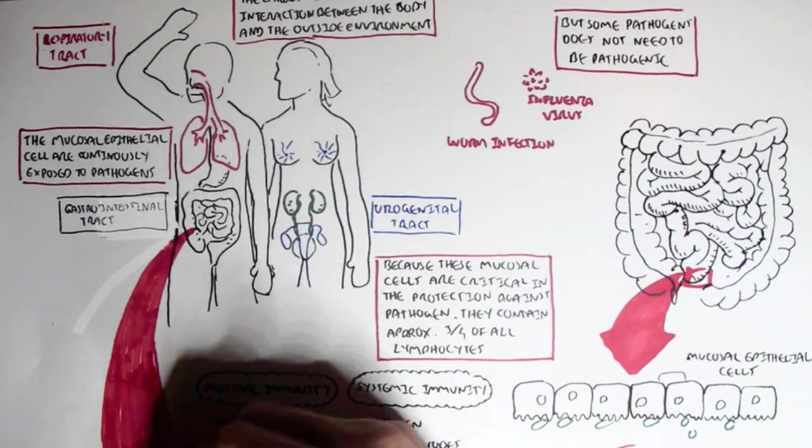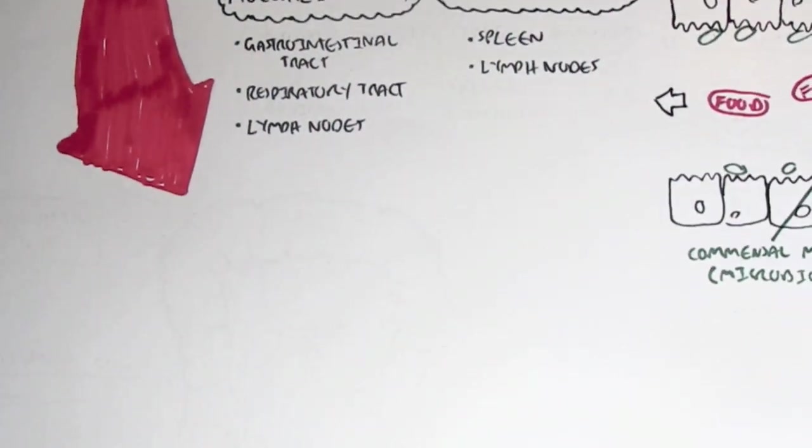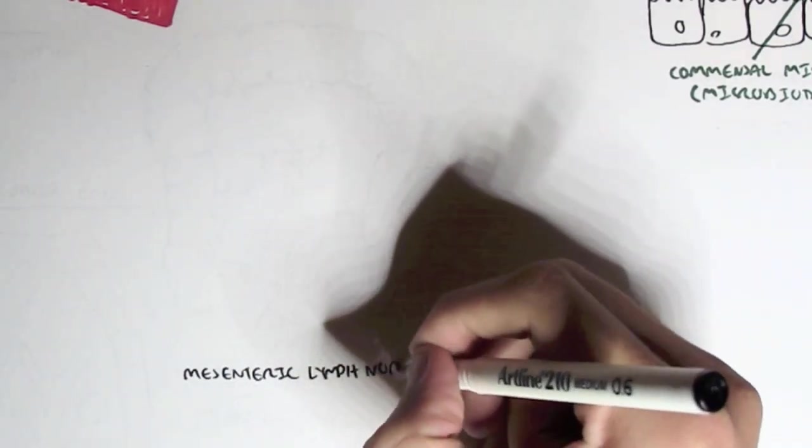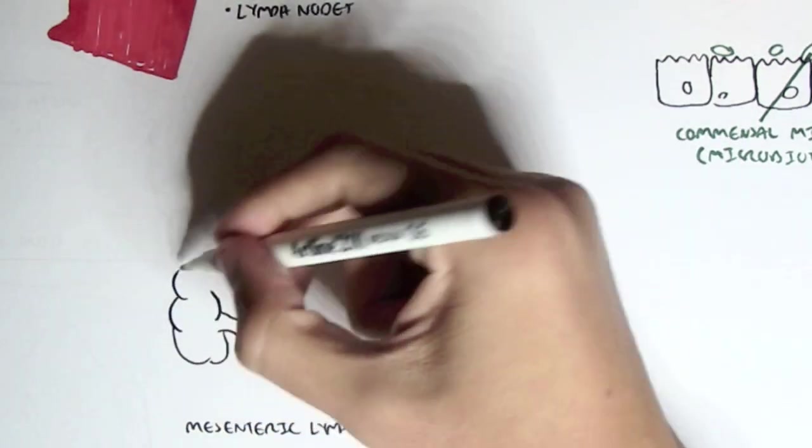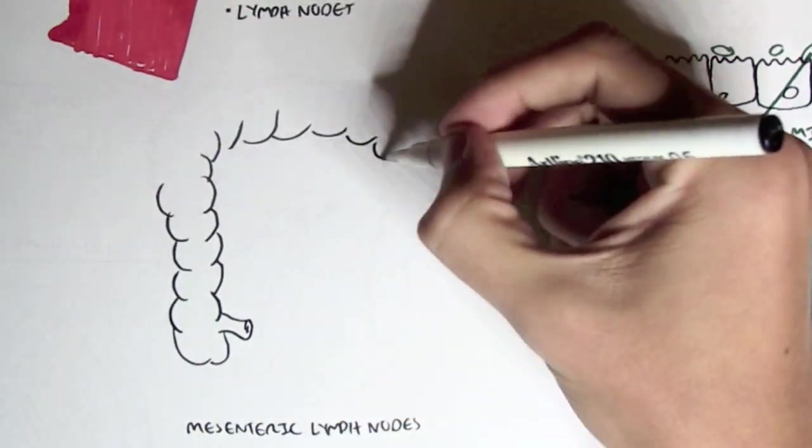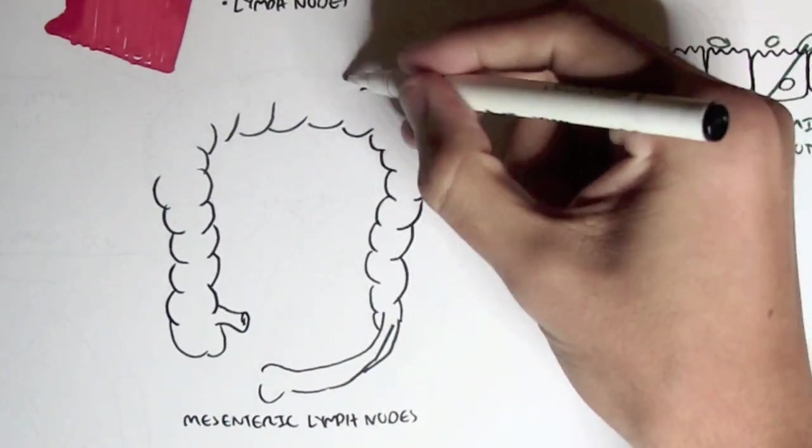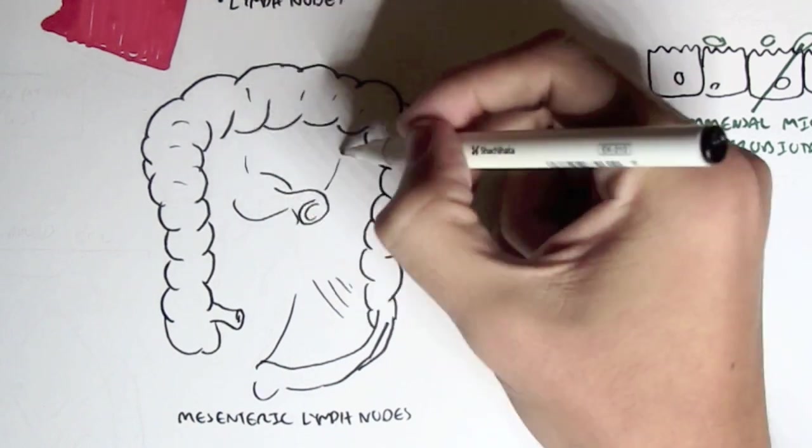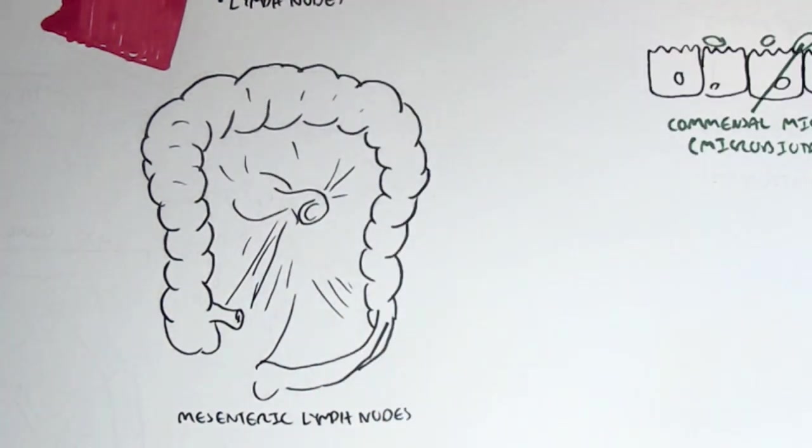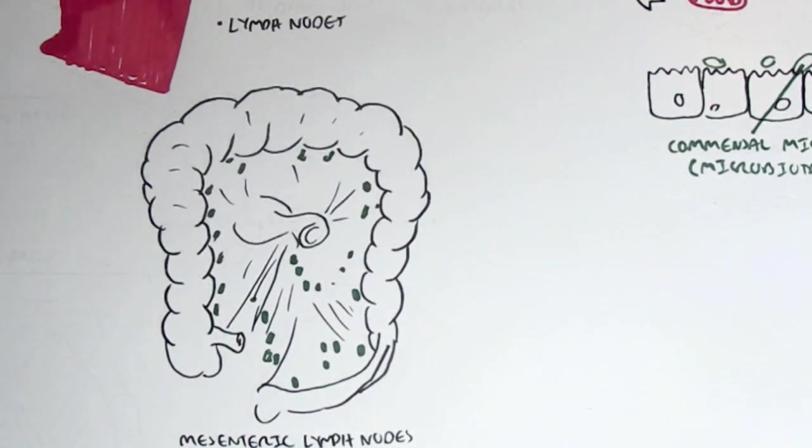Now I should have also said that the mucosal immune system also has lymph nodes because lymph nodes are important in initiating the adaptive immune response. These lymph nodes within the gut are known as mesenteric lymph nodes. There are also lymph nodes near our lungs. The mesenteric lymph nodes are all around the gastrointestinal tract particularly the small intestines.